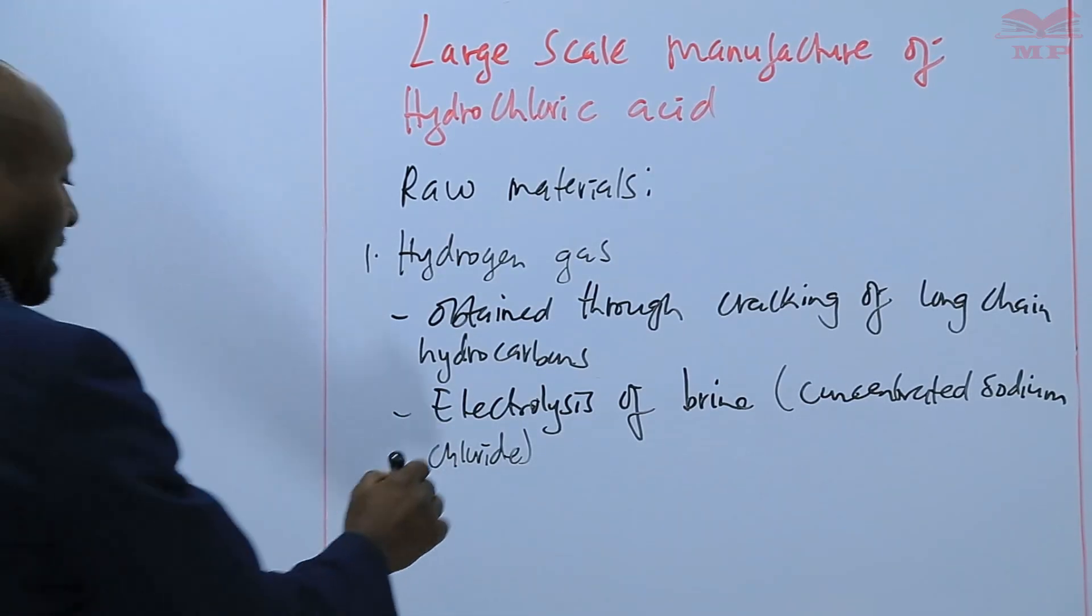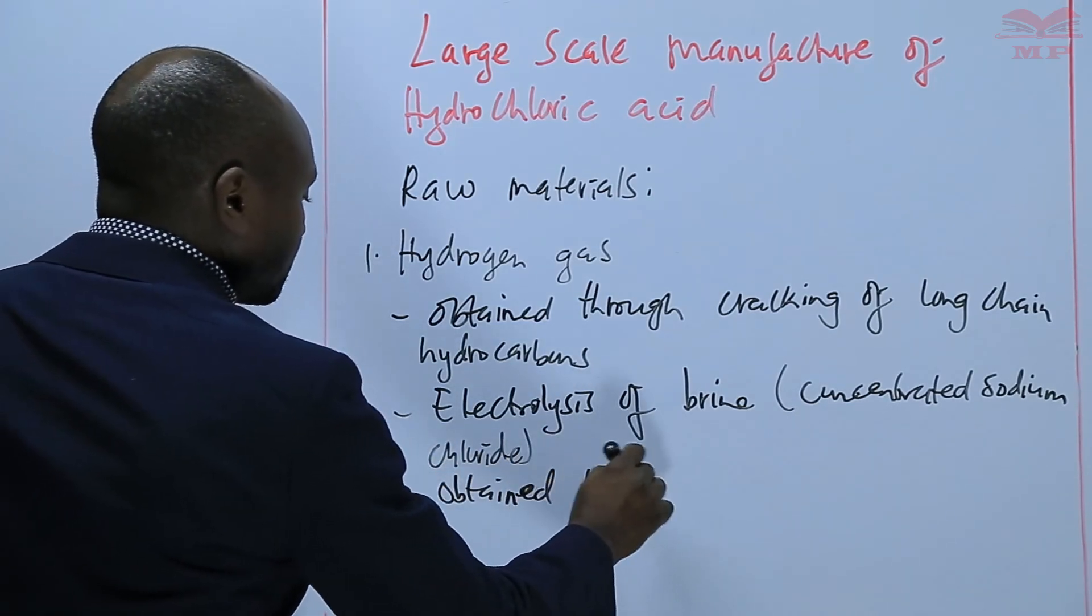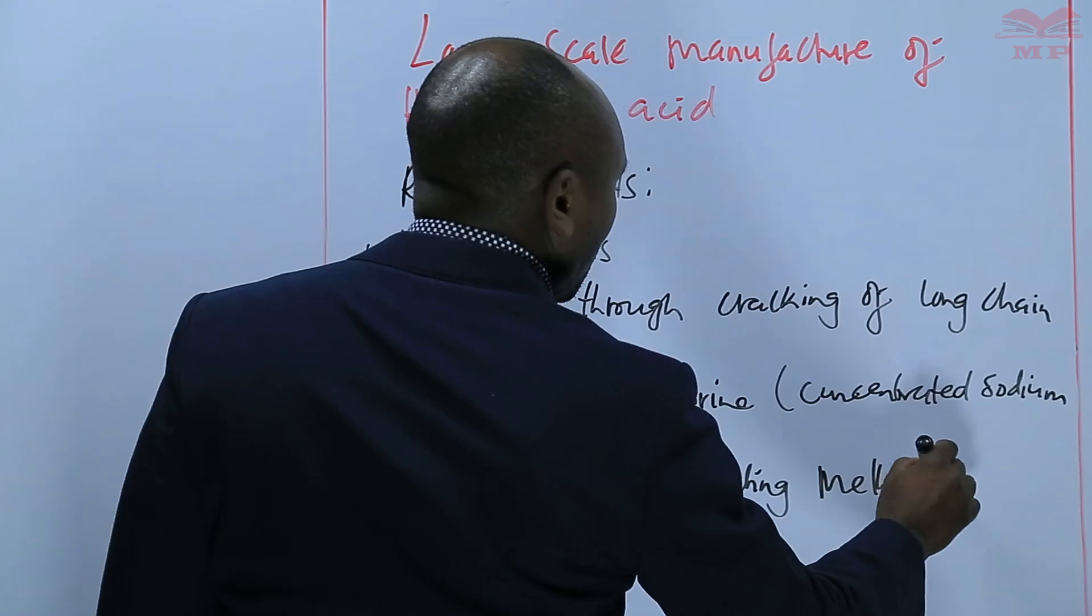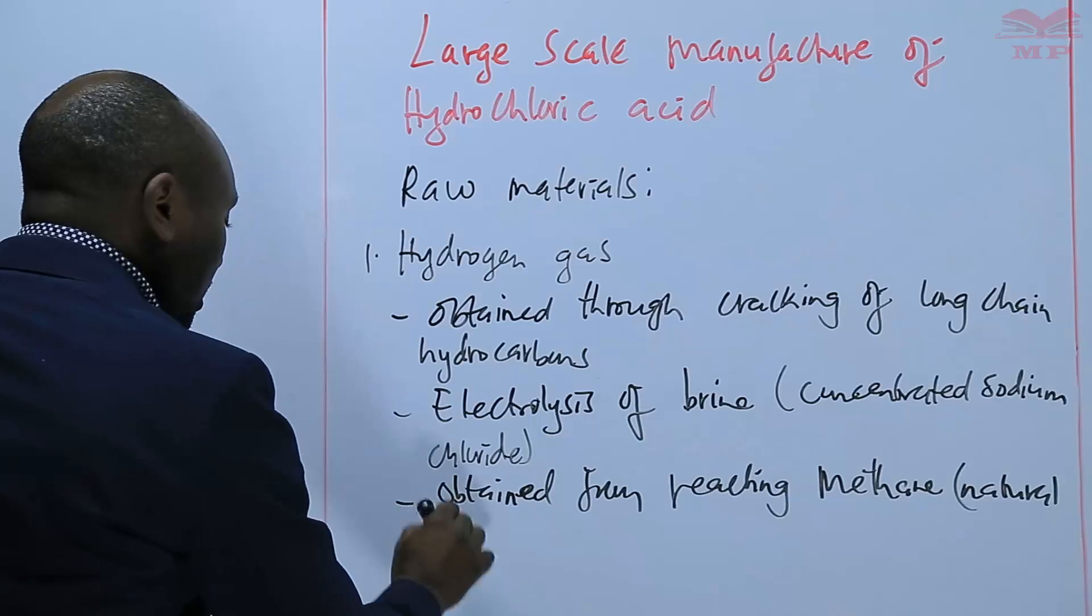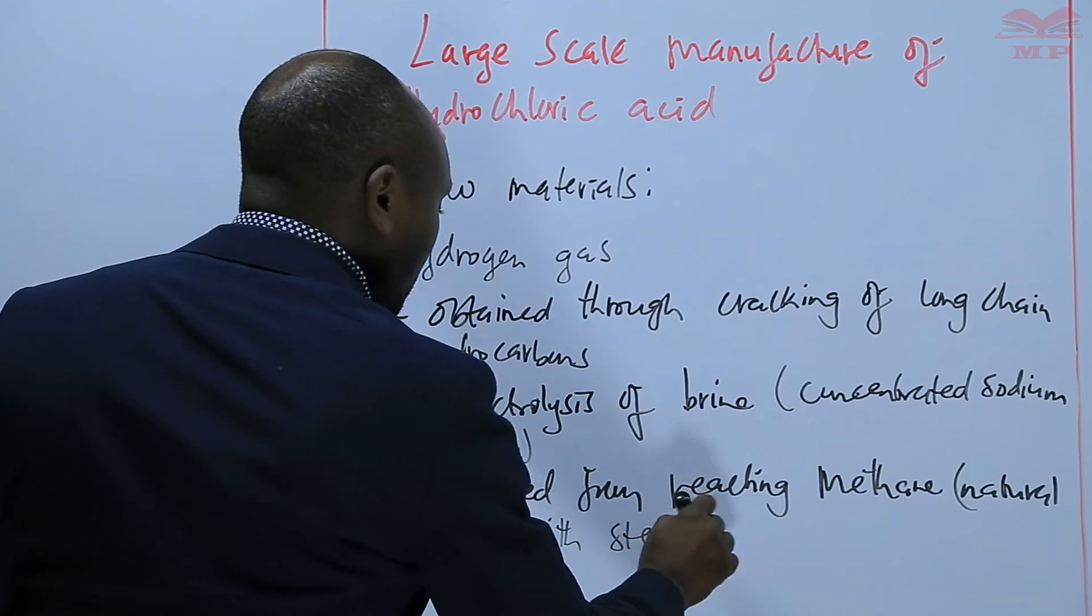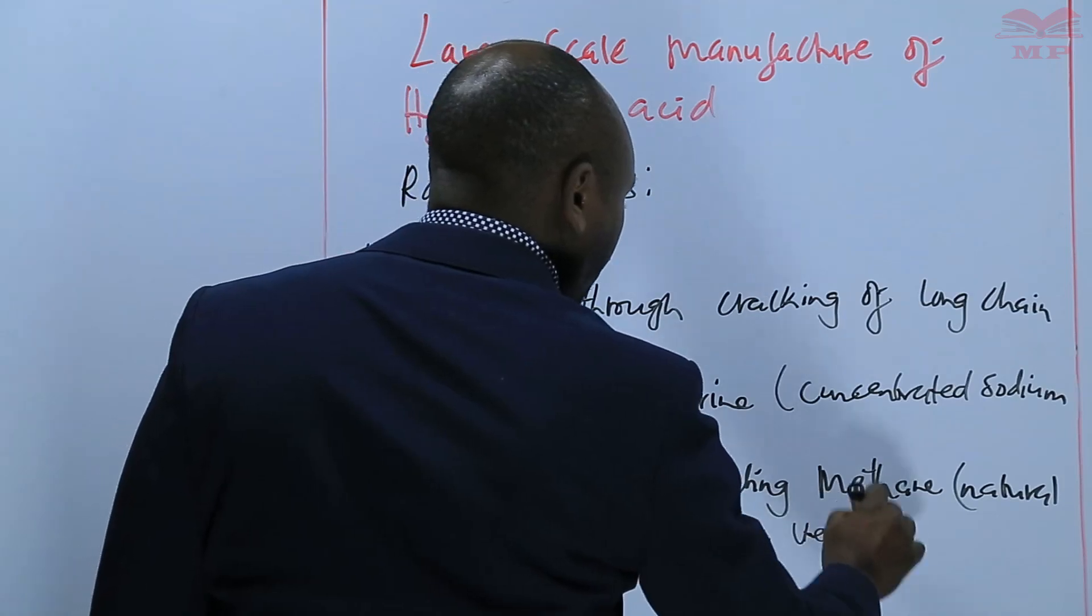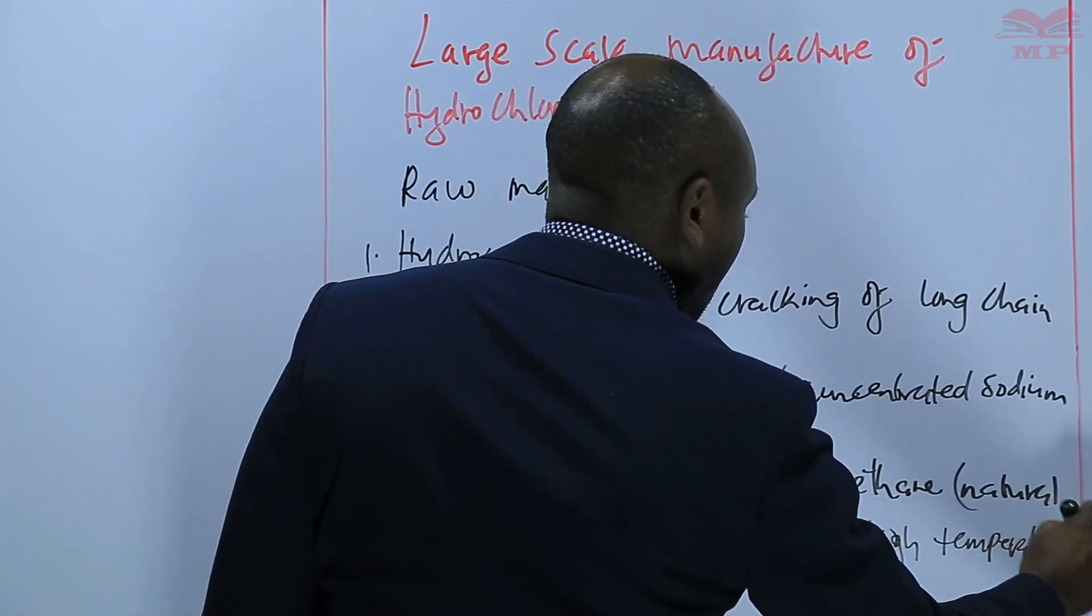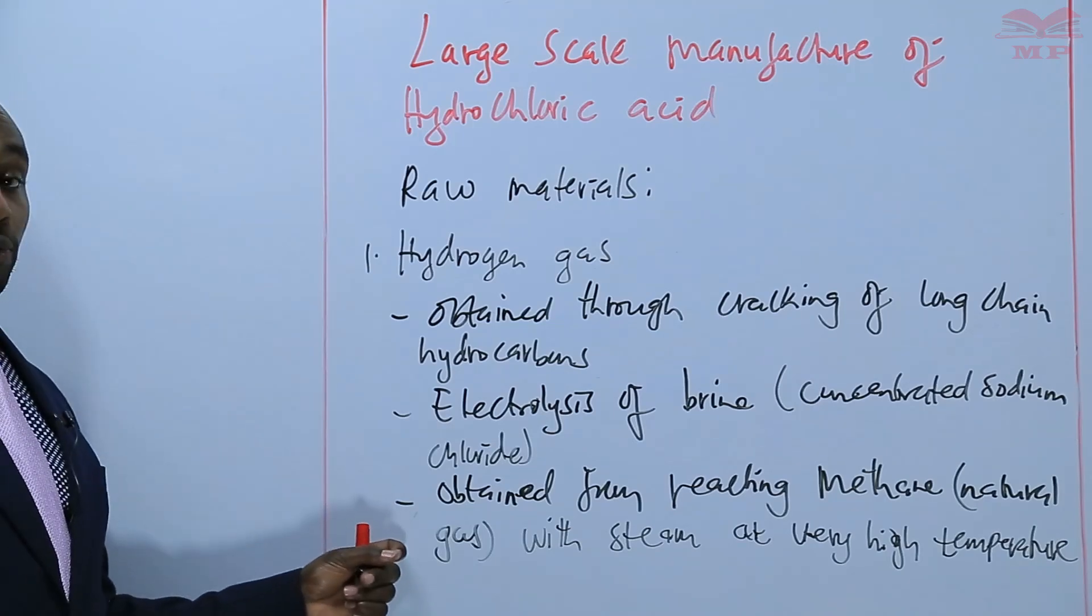And also, we can obtain it from reacting methane, also known as natural gas. Natural gas is methane with steam at very high temperature. So methane, which is a gas, and steam can be reacted at very high temperature to produce hydrogen gas.